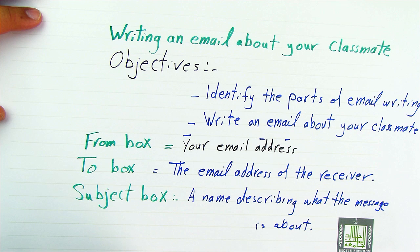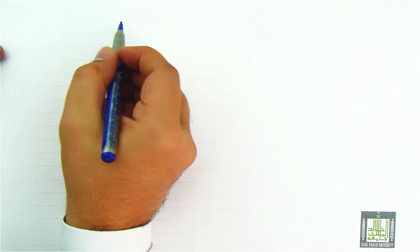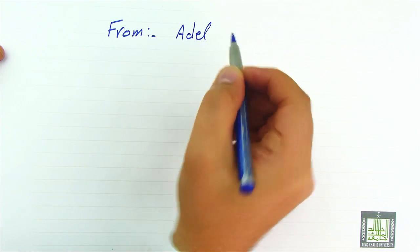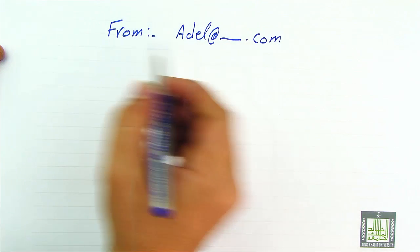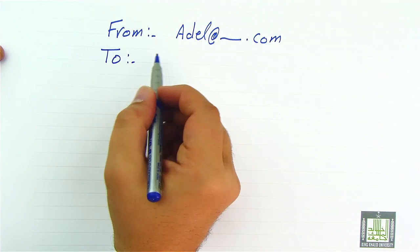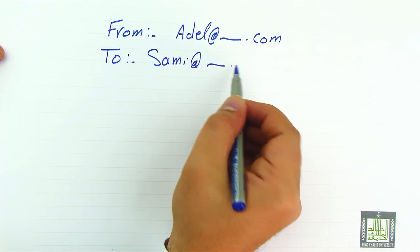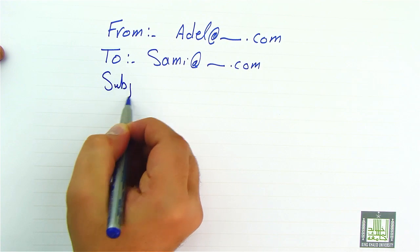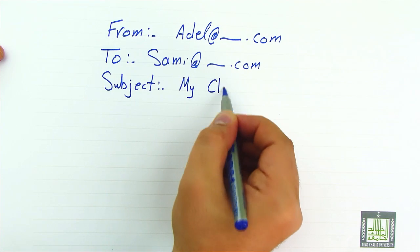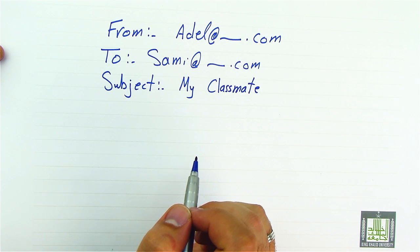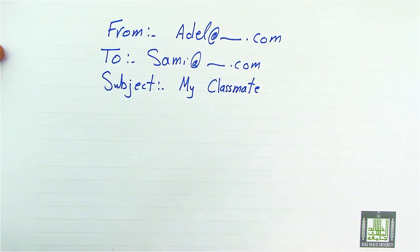Now let's start writing an actual email to someone about our classmate and apply the practical steps towards writing an email. We start with From — from me, for example: adil@whatever.com. Then To: sammy@whatever.com. And the Subject is: My Classmate, because this describes what I am writing about.